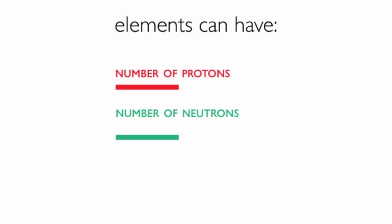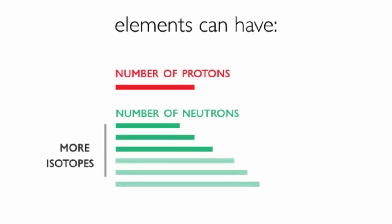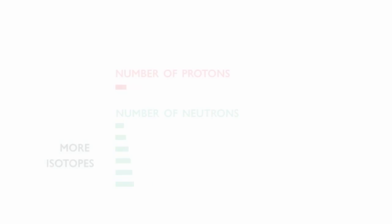Elements can exist with slightly different numbers of neutrons, and we call these isotopes of an element. It is particularly common for heavier elements where a lot of neutrons are required to hold the nucleus together, but smaller and lighter examples include the isotopes of hydrogen.